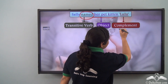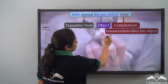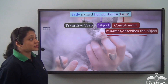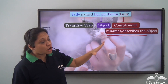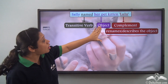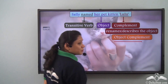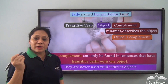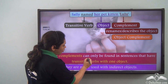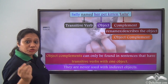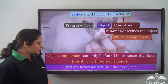So 'Lulu' is the complement because it is completing the predicate. Now this complement renames or describes the object — Sally named her pet kitten what? Lulu. So Lulu, which is the complement, is renaming or describing the object 'her pet kitten.' So this complement is the object complement. A very important point to remember is that object complements can only be found in sentences that have transitive verbs with one object — that means the direct object.